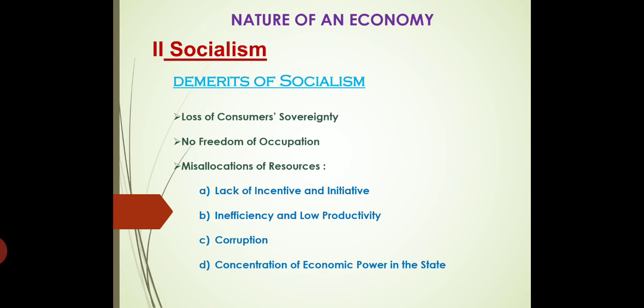Misallocation of resources might be possible because of lack of incentive and initiative. In a government setup, whenever they talk about incentives, it will be a group incentive — whether the work is done by one person or the whole group, everyone is given the same incentive. Because of this, people's motivation towards doing better work will be less, and they will not take initiative because they know it will not give them any personal benefits. This leads to inefficiency and low productivity, as people will not work as effectively and it will affect the overall productivity.